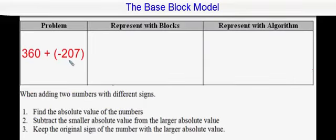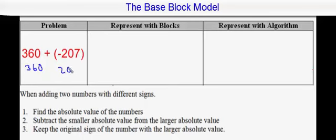Here we are adding two integers that have different signs. This integer is positive, this integer is negative. When adding two numbers with different signs, step 1 is to find the absolute value of the numbers. The absolute value of 360 is 360. The absolute value of negative 207 would be 207.